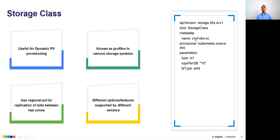Here's a YAML example creating a storage class for a CNCF EBS storage class. We specify a provisioner and parameters — though parameters are not consistent across cloud providers and vendors. In this example, the storage class uses type io1 and guarantees 10 IOPS per GB.